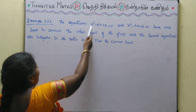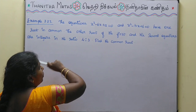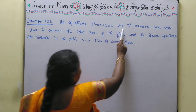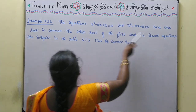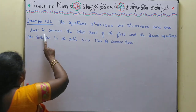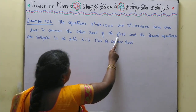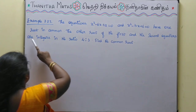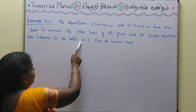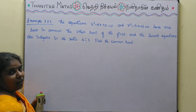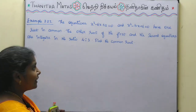The equations x squared minus 6x plus a equals 0, and x squared minus bx plus 6 equals 0, have one root in common. The other roots of the first and second equations are integers in the ratio 4 to 3. Find the common root.